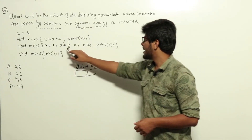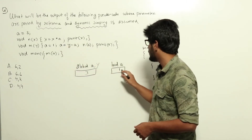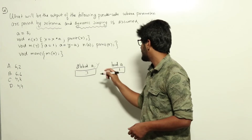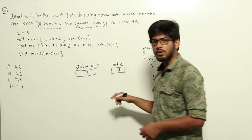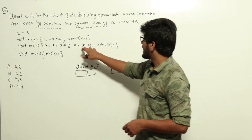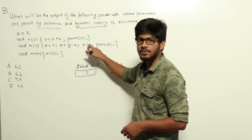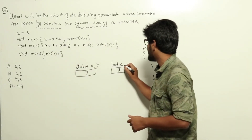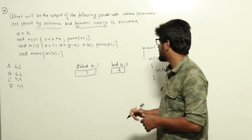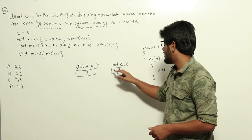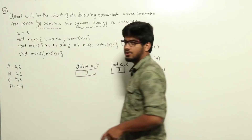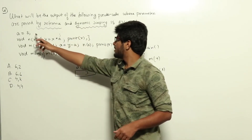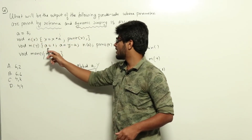Now we are doing a equal to y minus a. y is 3, and the a being referred to here is local a, so local a becomes 3 minus 1, which is 2. Now we call n of a — this local a with value 2 is being passed to function n by reference, so x and local a are pointing to the same variable. x has value 2.